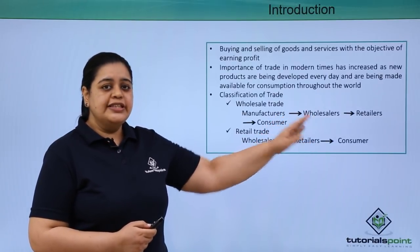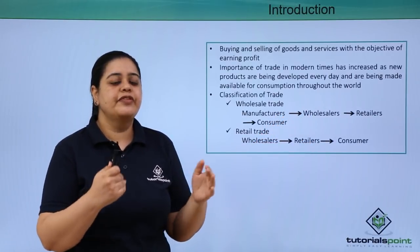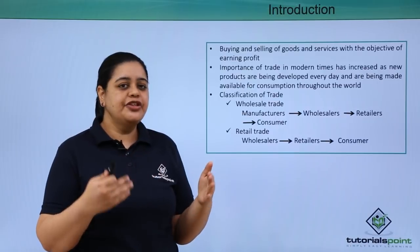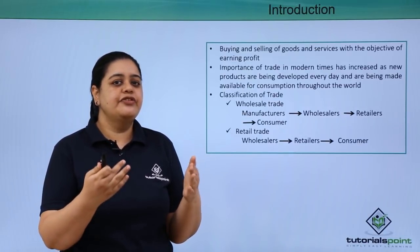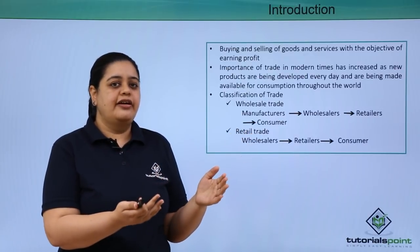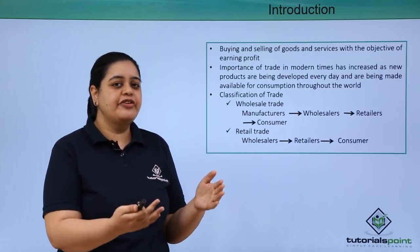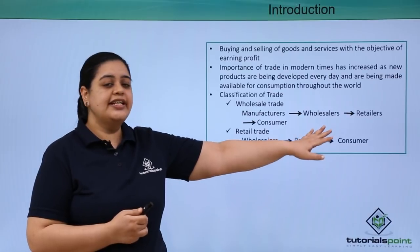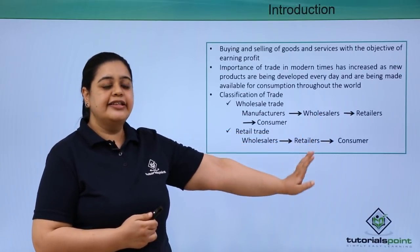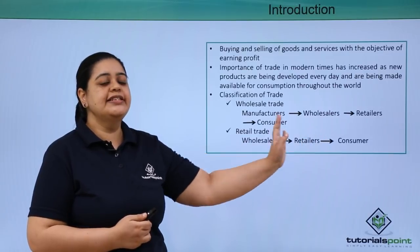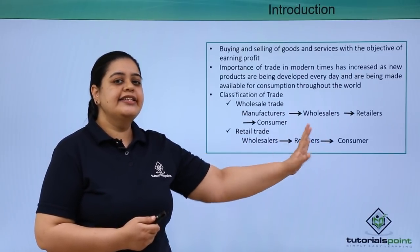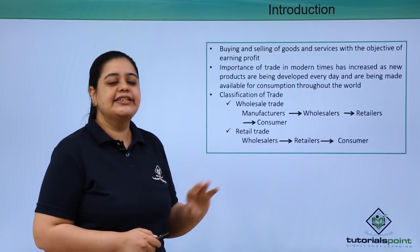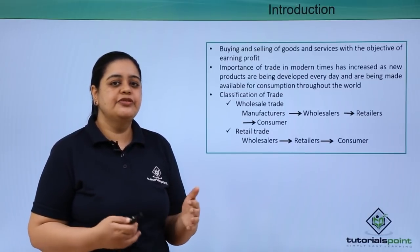Wholesalers always buy in bulk quantity — in the case of wheat, they would be buying tons from the producers. But retailers buy in smaller quantities, like kilograms. A retailer's requirement can be as low as 100 kg. So wholesalers purchase on a wholesale basis directly from the manufacturer, then distribute to retailers in small quantities, and those retailers finally sell to the ultimate consumer — the person who is going to consume the goods.